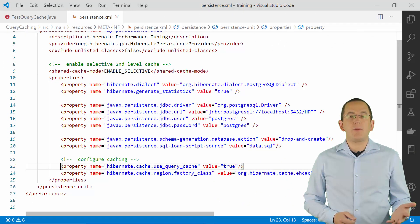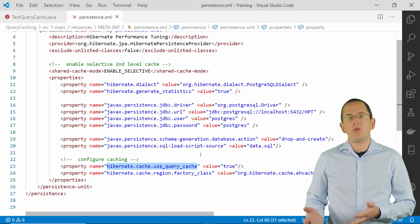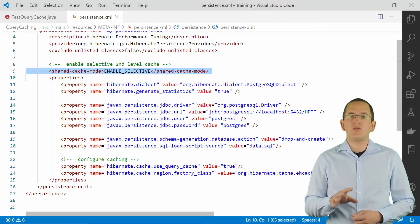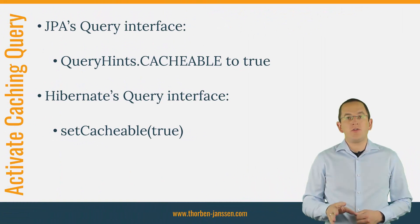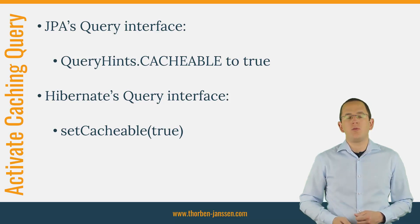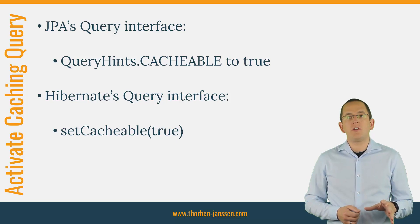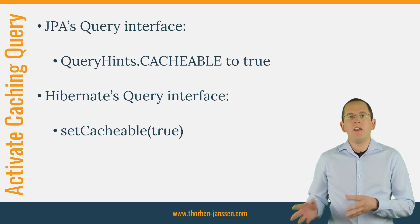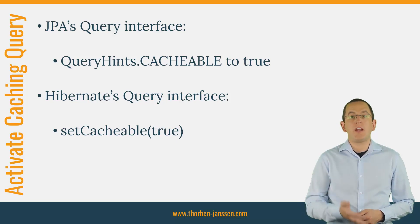You can activate the query cache by setting the hibernate.cache.use_query_cache parameter in your persistence.xml to true. And if you want to use the query cache for any query that returns entities, you should also make sure to configure the second level cache for those entities. After you activate the query cache, you need to tell Hibernate to cache the result of the query — you can do that in two ways. If you are using JPA's query interface, you can set the query hint queryhints.cacheable to true. If you are using Hibernate's query interface, you can call the setCacheable method with true. Both options create the same result: Hibernate checks the query cache before executing the query, returns the cached result if available, or executes the query and stores the result in the cache.